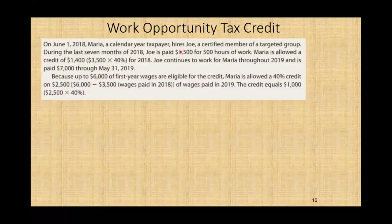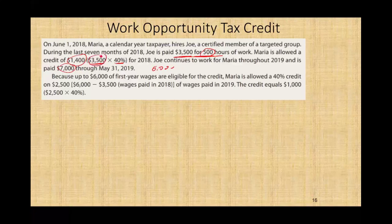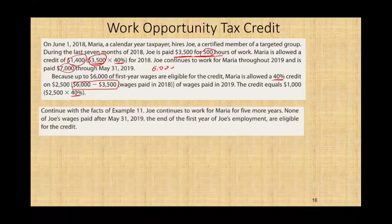On June 1st, Maria, a calendar-year taxpayer, hires Joe, a certified member of a target group. During the last seven months of 2018, Joe is paid $3,500 for 500 hours of work. Maria gets a credit of $3,500 × 40% = $1,400 for 2018. In 2019, Joe is paid $7,000, but only the remaining $2,500 of the $6,000 cap is eligible: $2,500 × 40% = $1,000. After that, even if Joe continues working for five more years, no additional credit is available.